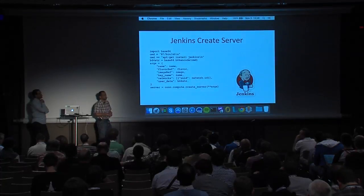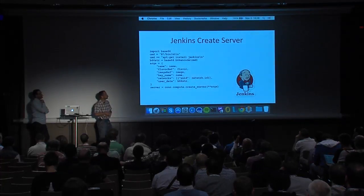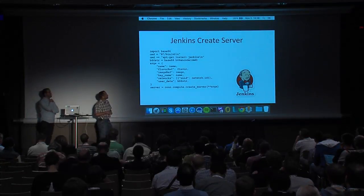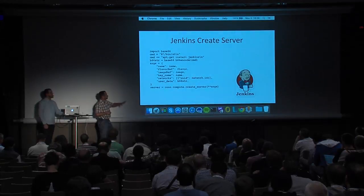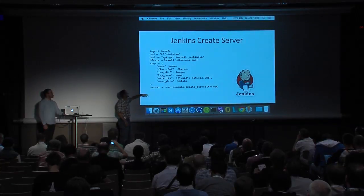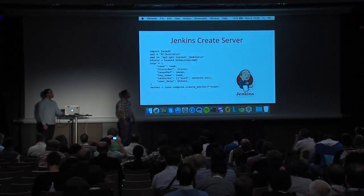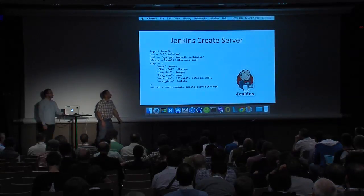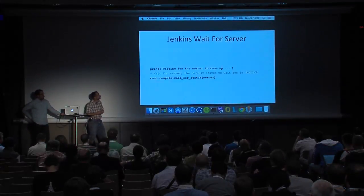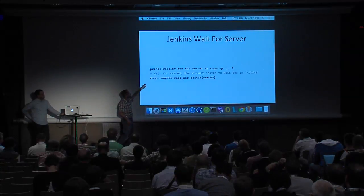Then finally we get down to — this is greatly simplified from the example in the code — creating a server. Here we're using cloud-init to apt-get install Jenkins. In order to install Jenkins you need to add a repo to apt-get and do apt-get update to refresh what the repo knows about. There's also a basic security thing where you could at least have a login so your Jenkins server isn't accessible by anyone. We're passing in our user data for cloud-init, and we've associated our network, key, image, flavor, and name, and it calls create.